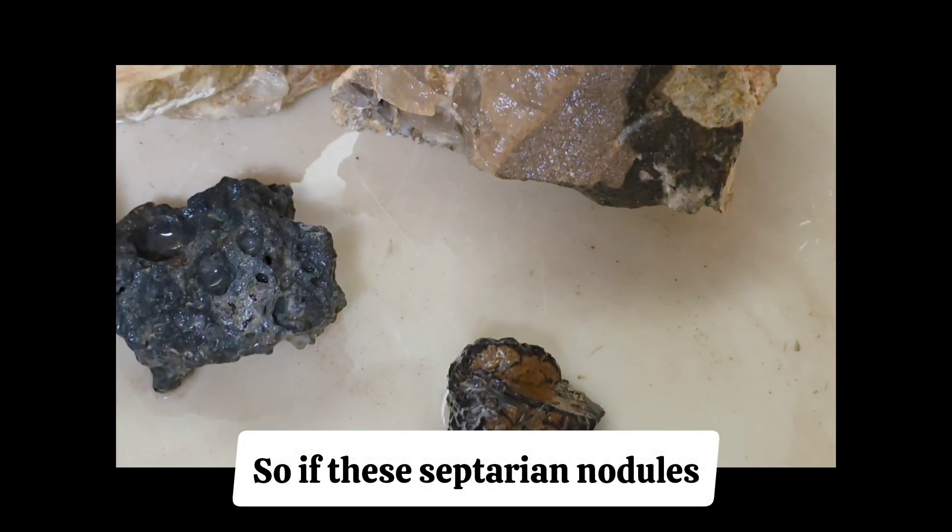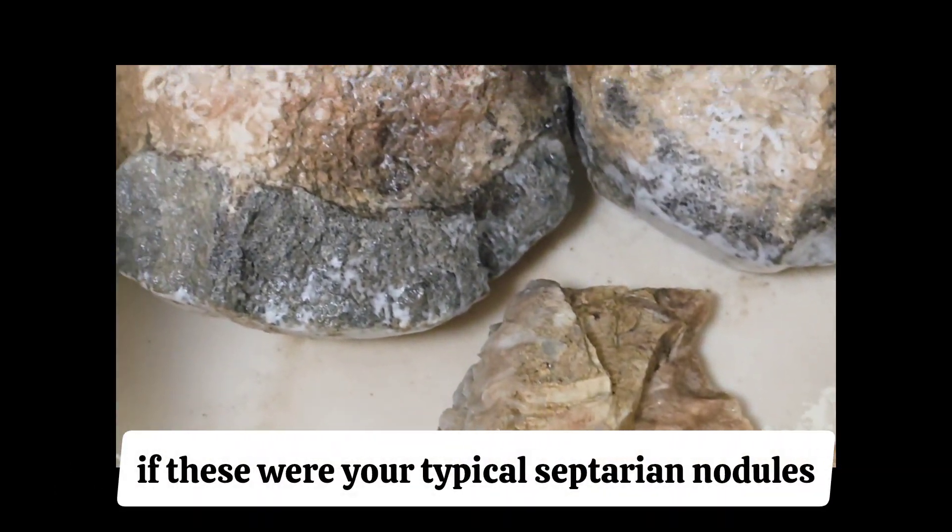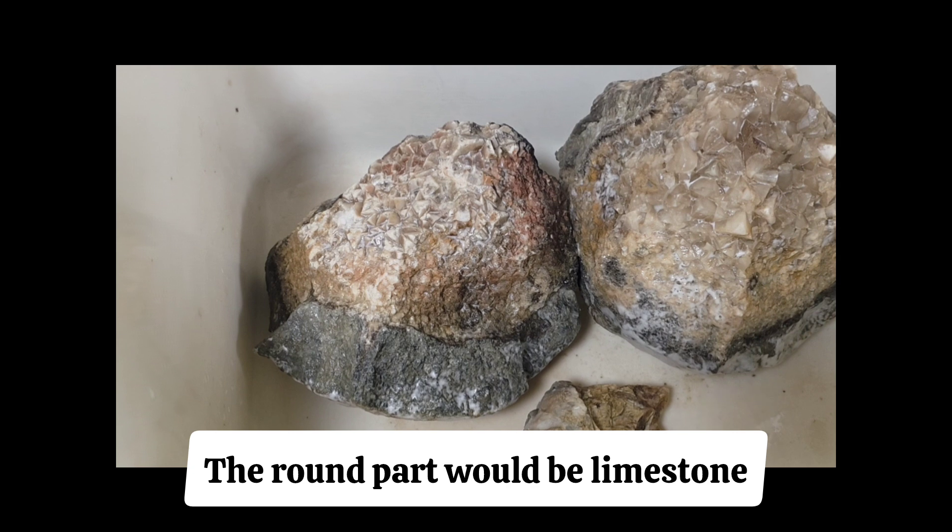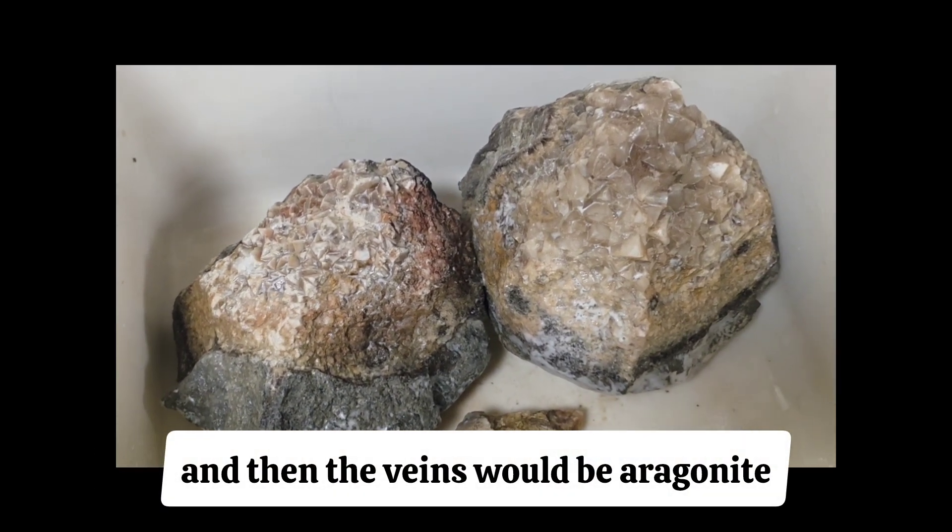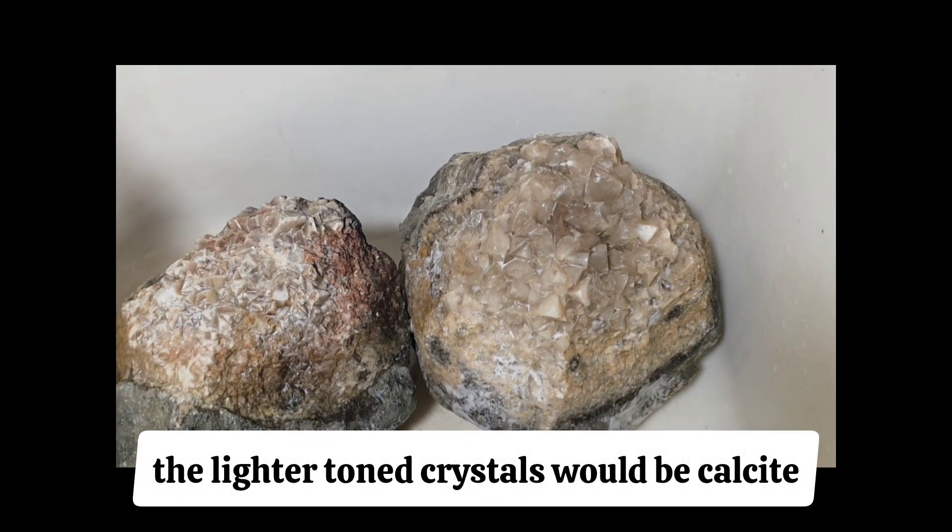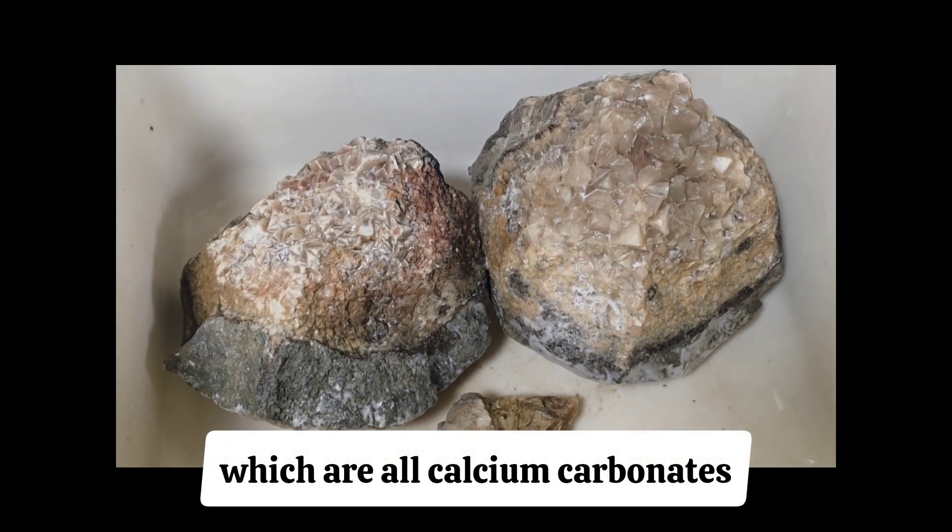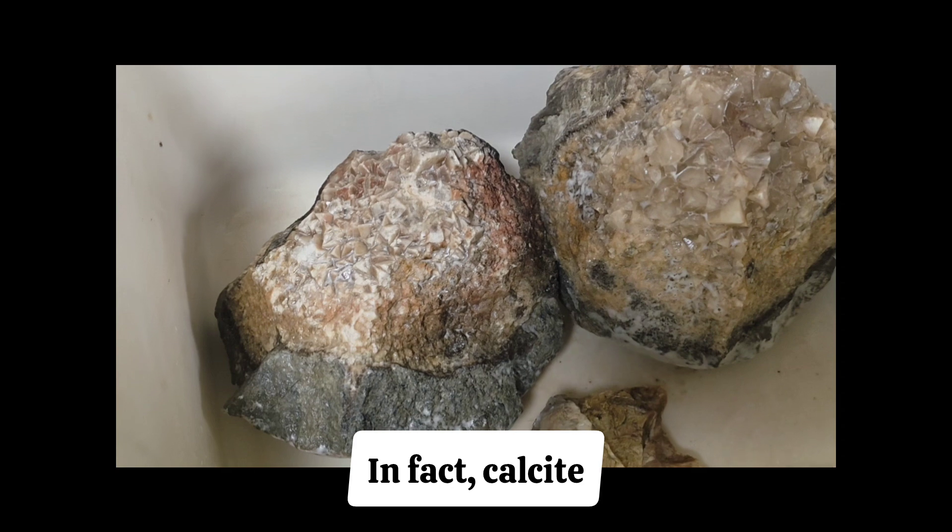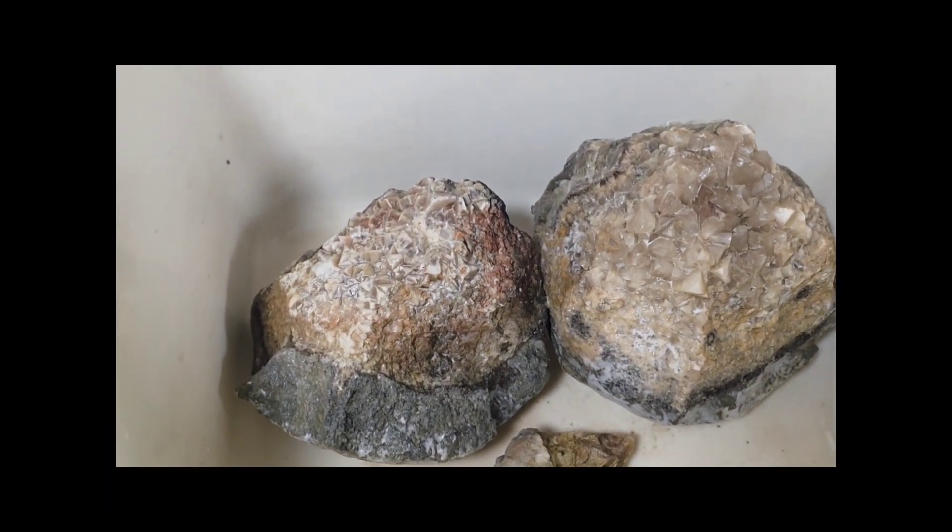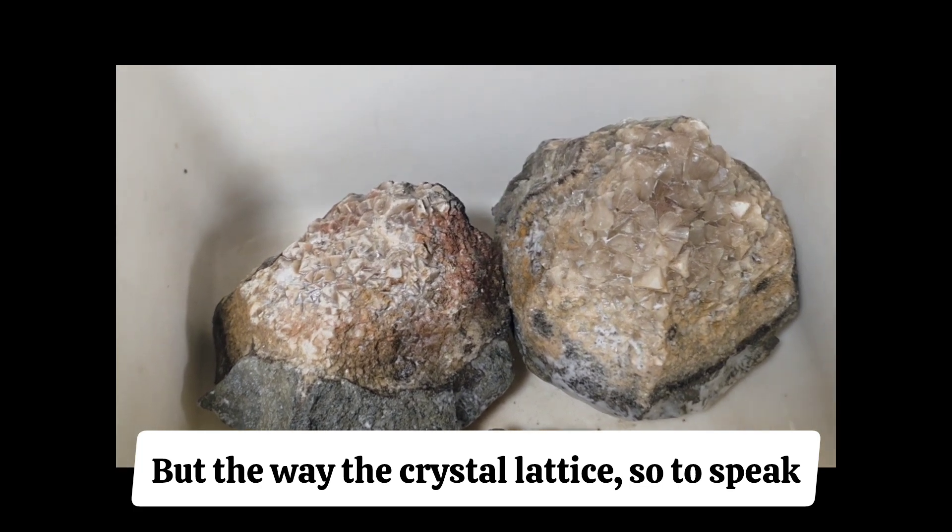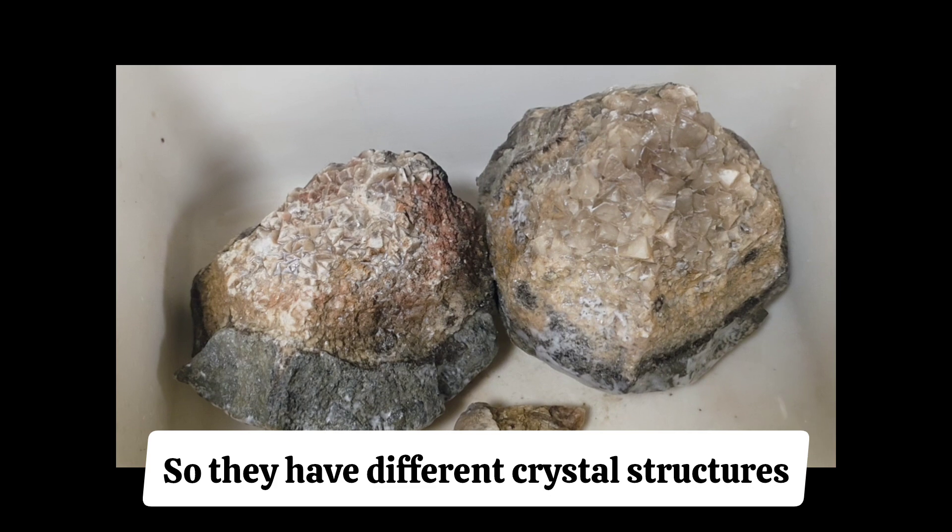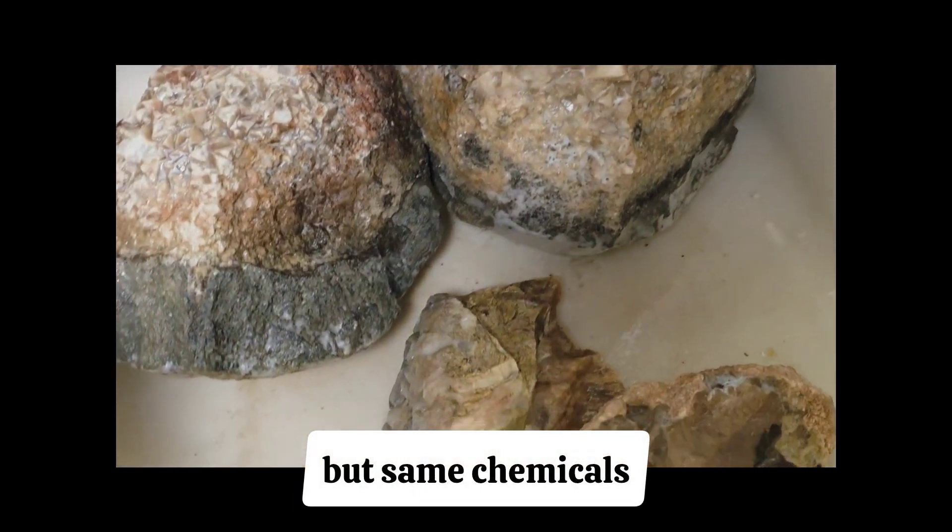So if these septarian nodules, if these were your typical septarian nodules, they would be limestone. The round part would be limestone. And then the veins would be aragonite. It'd be a darker color. And then the lighter toned crystals would be calcite, which are all calcium carbonates. In fact, calcite and aragonite are polymorphs, which means they have the same chemical composition. But the way the crystal lattice is set up is different. So they have different crystal structures, but same chemicals.